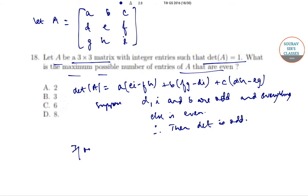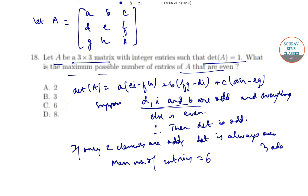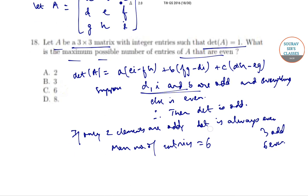Now if only two elements are odd, determinant is always even. So maximum number of entries should be 6, since if D, I, B are odd, we get 3 odd, so 6 are even. We could show this with an example.